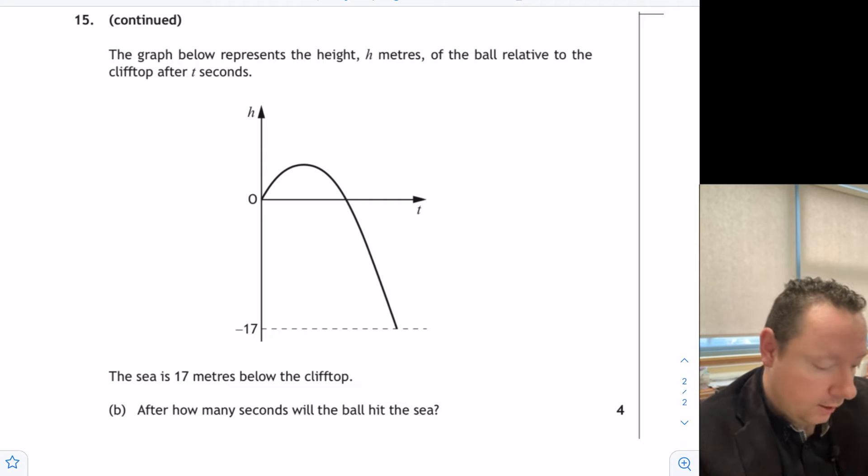Okay, Part B gives us the graph relative to the cliff top after t seconds. The sea is 17 meters below. After how many seconds will the ball hit the sea? Just remember our equation for the height was equal to 12t - 5t².